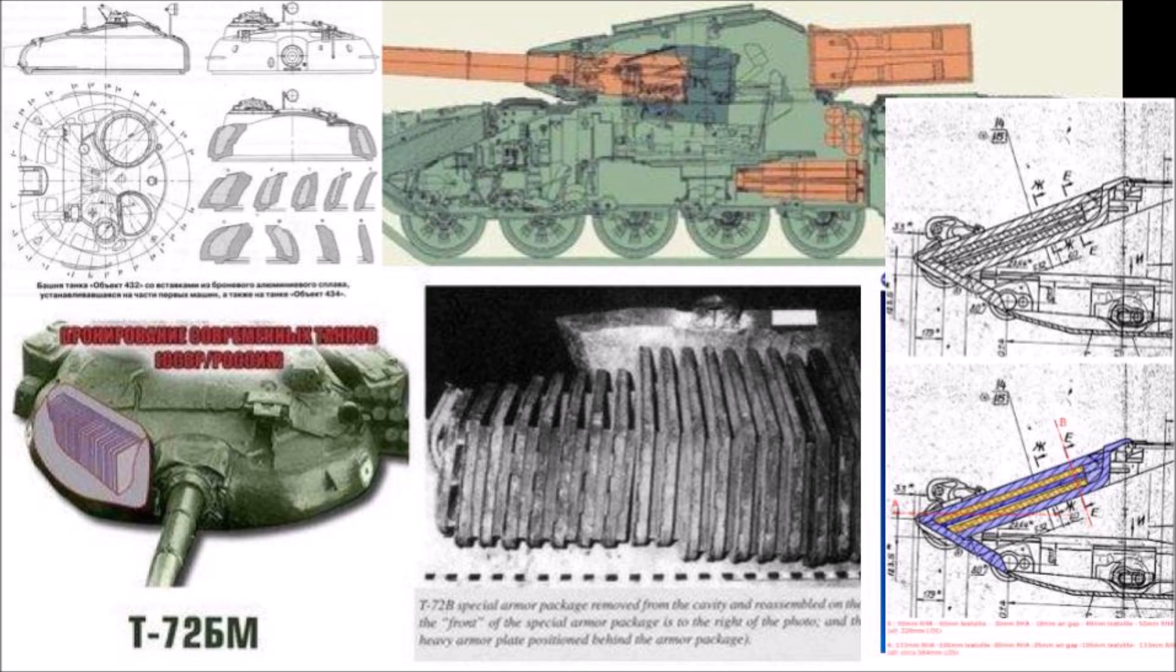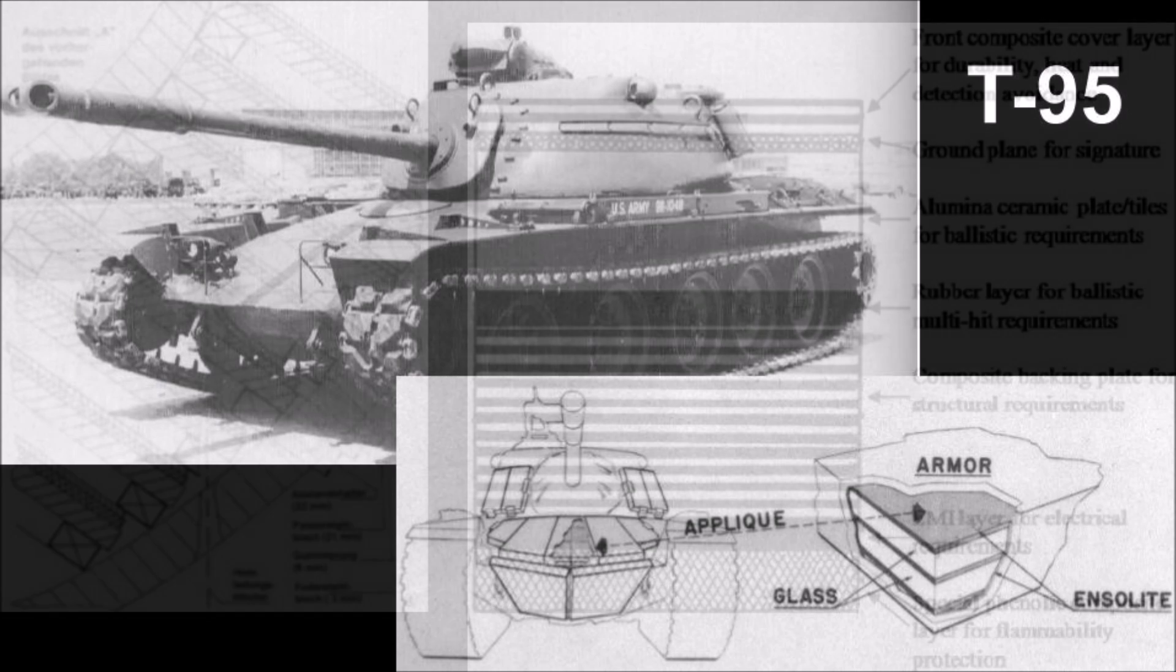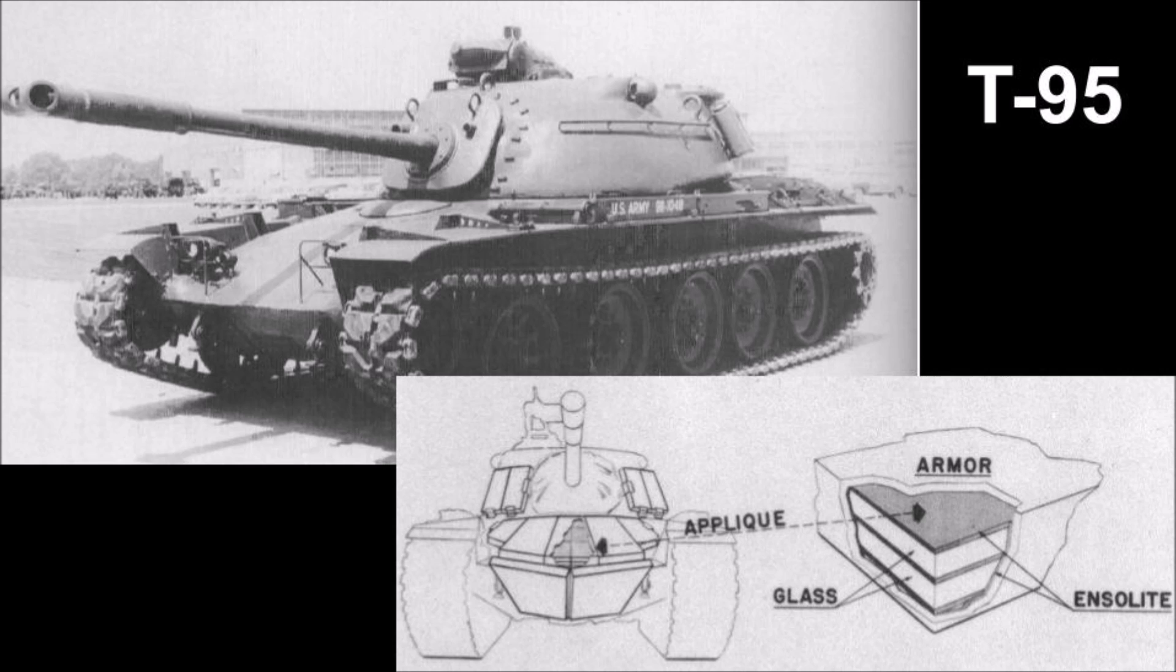By sandwiching hard layers of ceramics between layers of more ductile steel, the impressive penetration power of shaped charges could be diminished at an acceptable weight. The different properties of each layer complement each other, allowing the armor to do more with less.